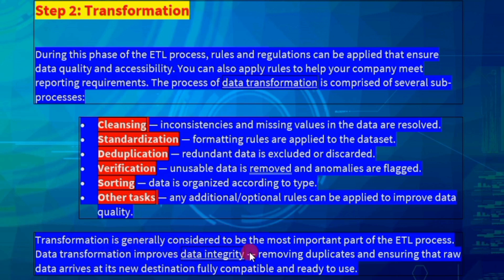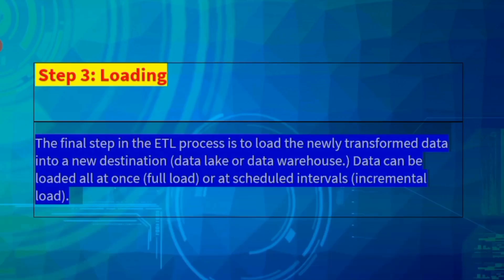Transformation is generally considered to be the most important part of the ETL process. Data transformation improves data integrity by removing duplicates and ensuring that raw data arrives at its new destination fully compatible and ready to use. The final step in the ETL process is Load — the newly transformed data is loaded into a new destination.